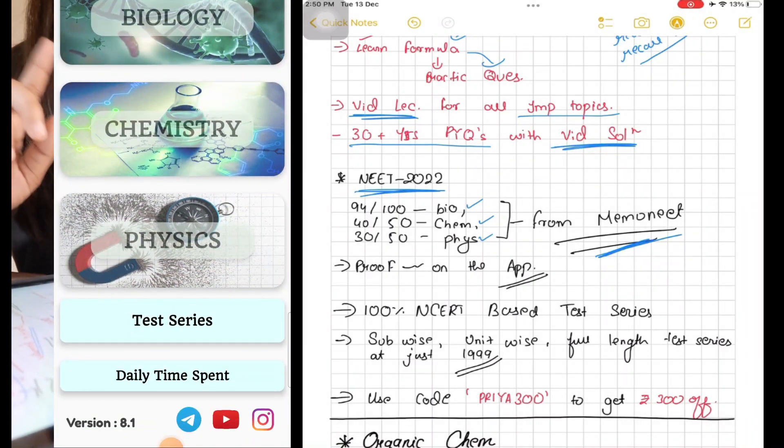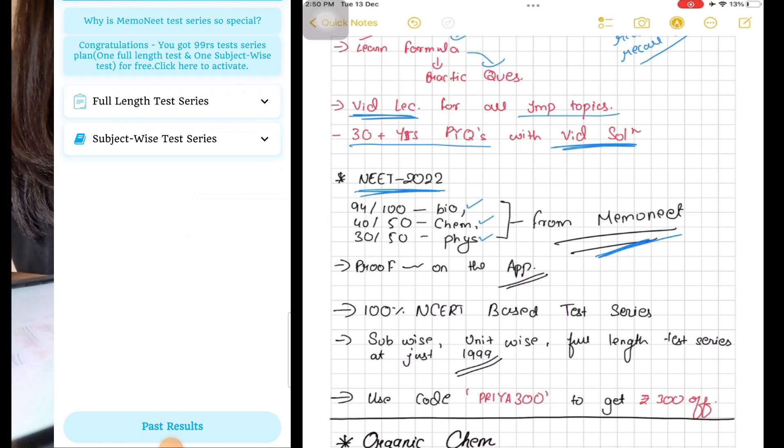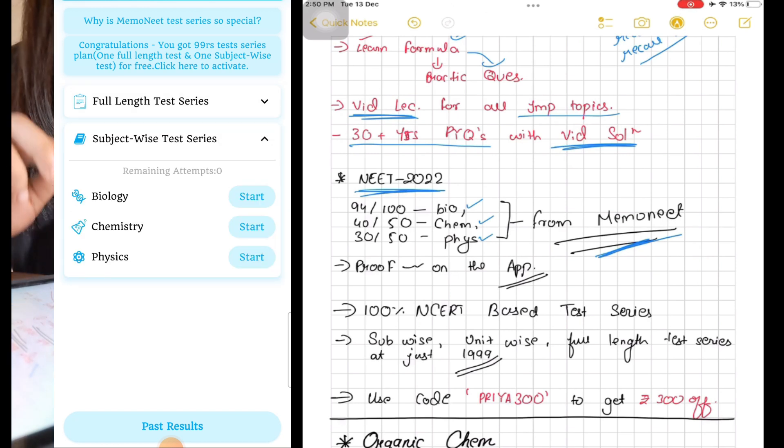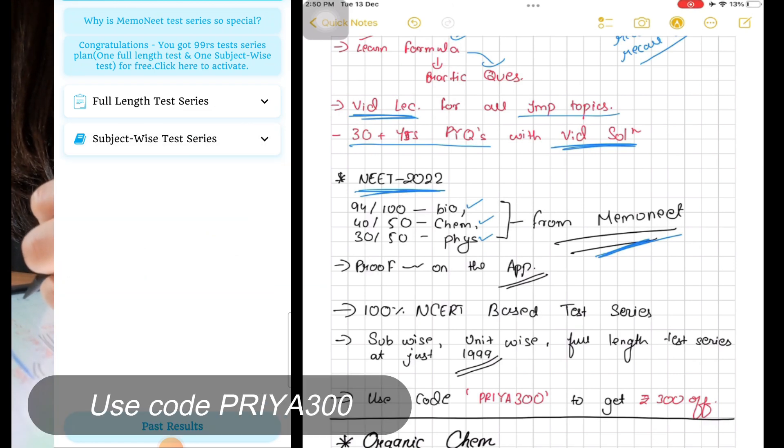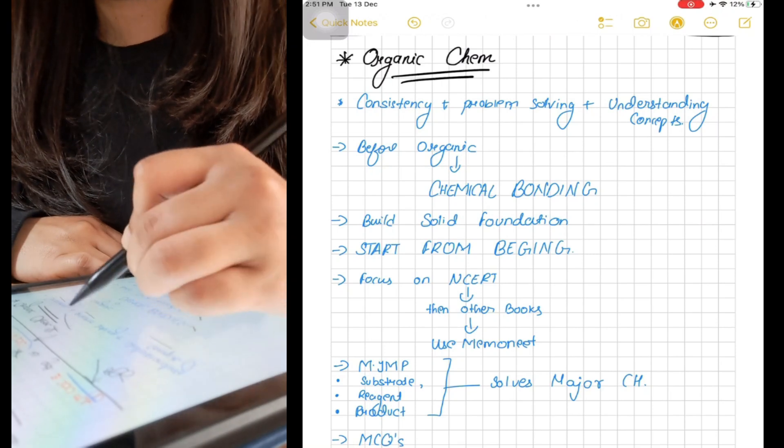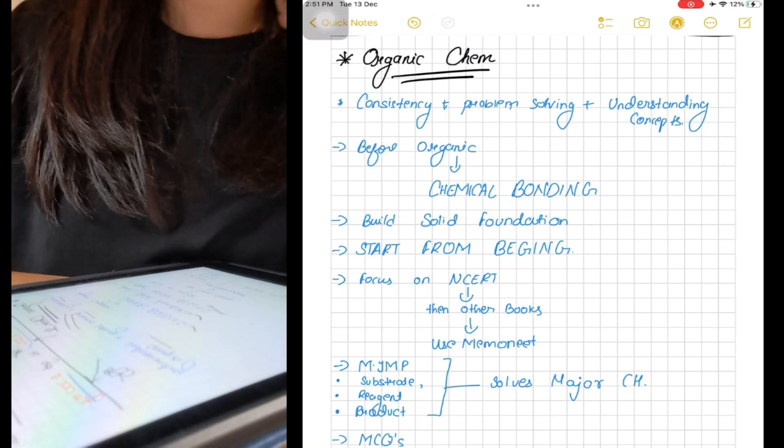The test series is so unique - it is 100% NCERT based. You can solve subject-wise, unit-wise, full-length test series for unlimited times just at ₹1999. If you want to use this amazing app for your preparation, use my code BREA300 and get ₹300 off. The link of this app is given below in the description.